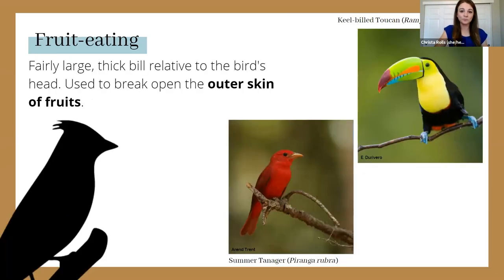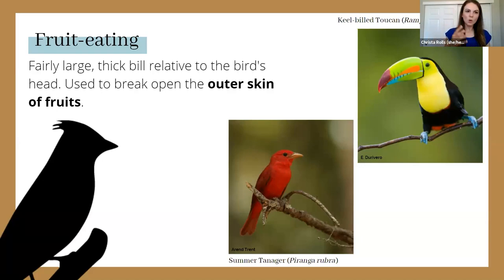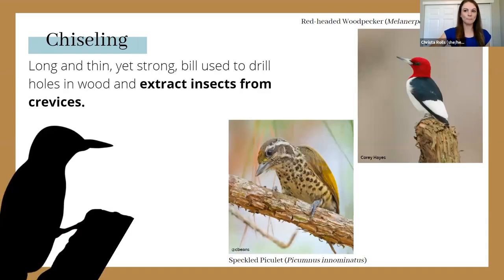Avocets are scything birds with a beautiful, uniquely shaped thin upturned bill used to sweep across the water's surface for insects. Fruit-eating birds show a range of bill shapes and sizes — from tanagers to toucans — but share an overall similar general shape not adapted for drilling wood or scything water. Chiseling birds like woodpeckers and sapsuckers have a very strong, thick, long bill designed for drilling into wood and extracting insects.